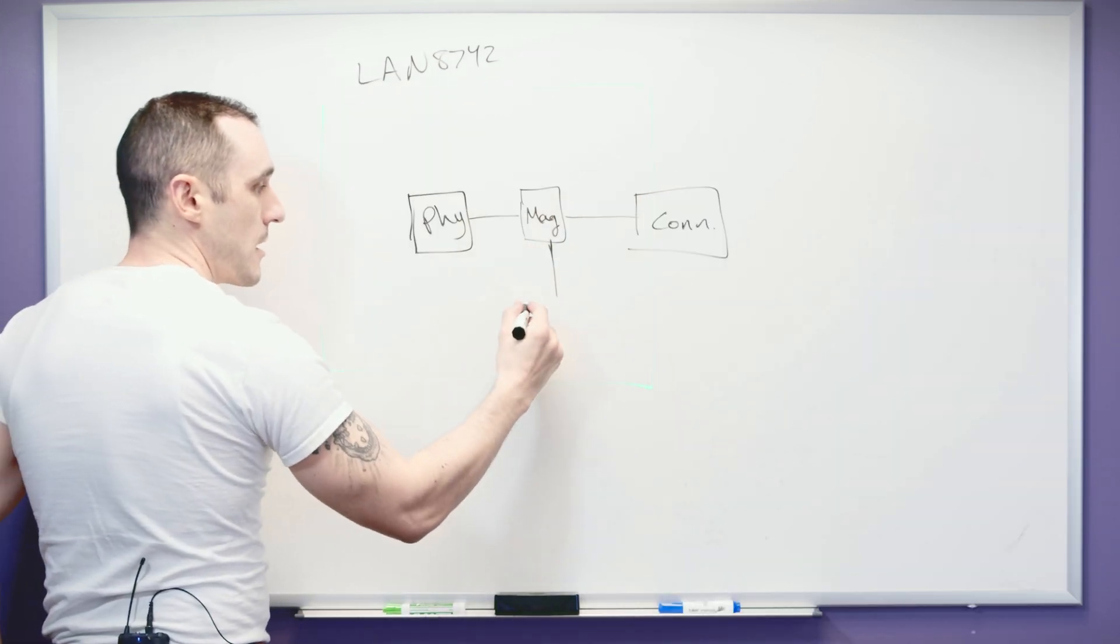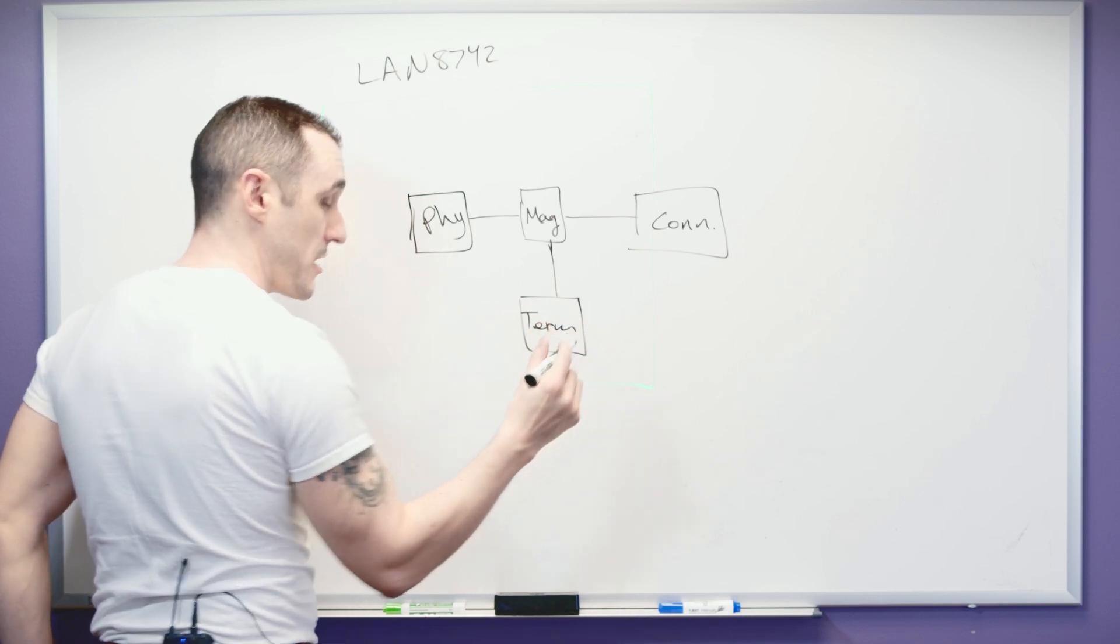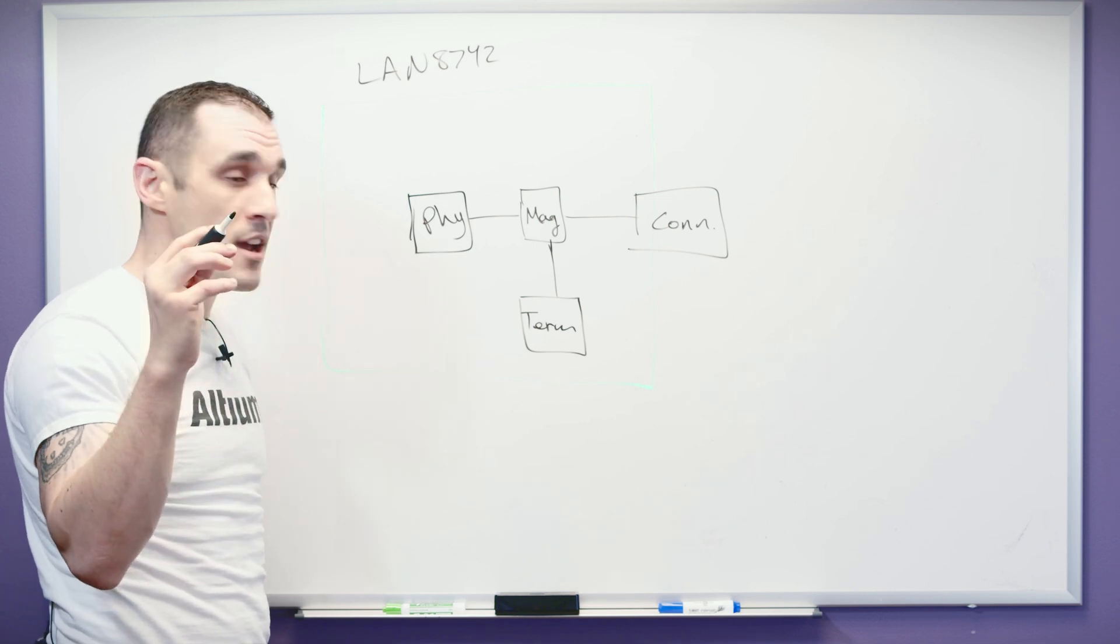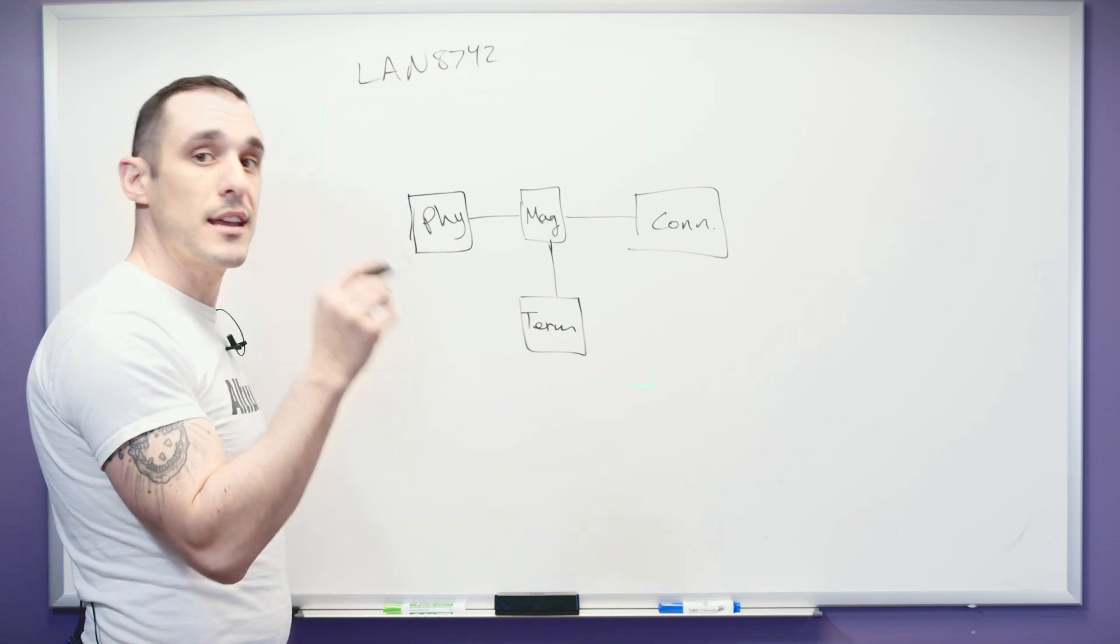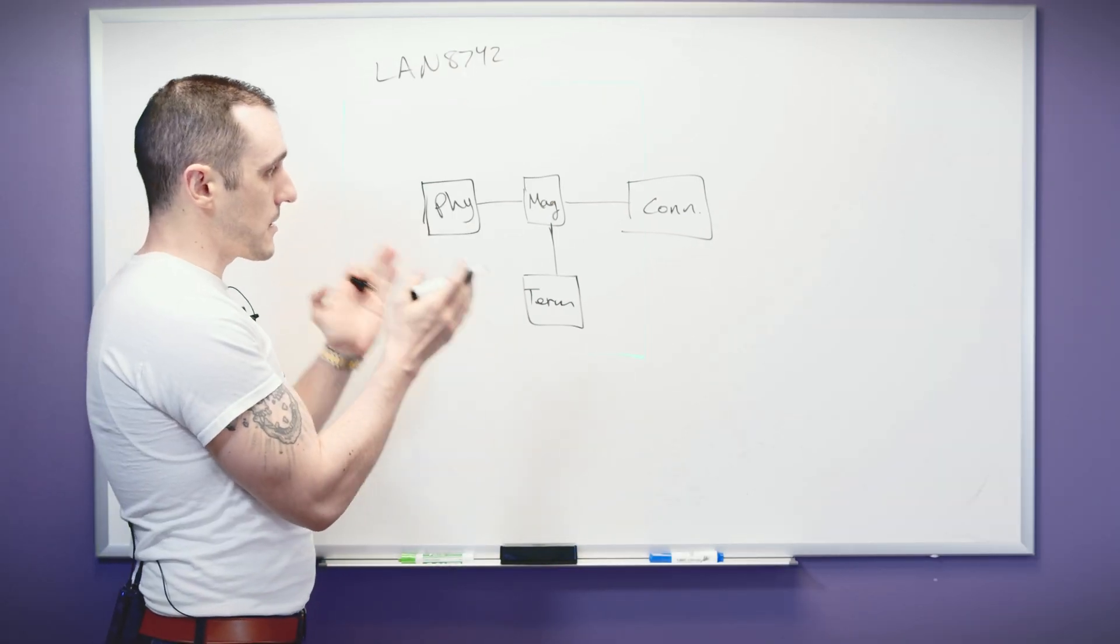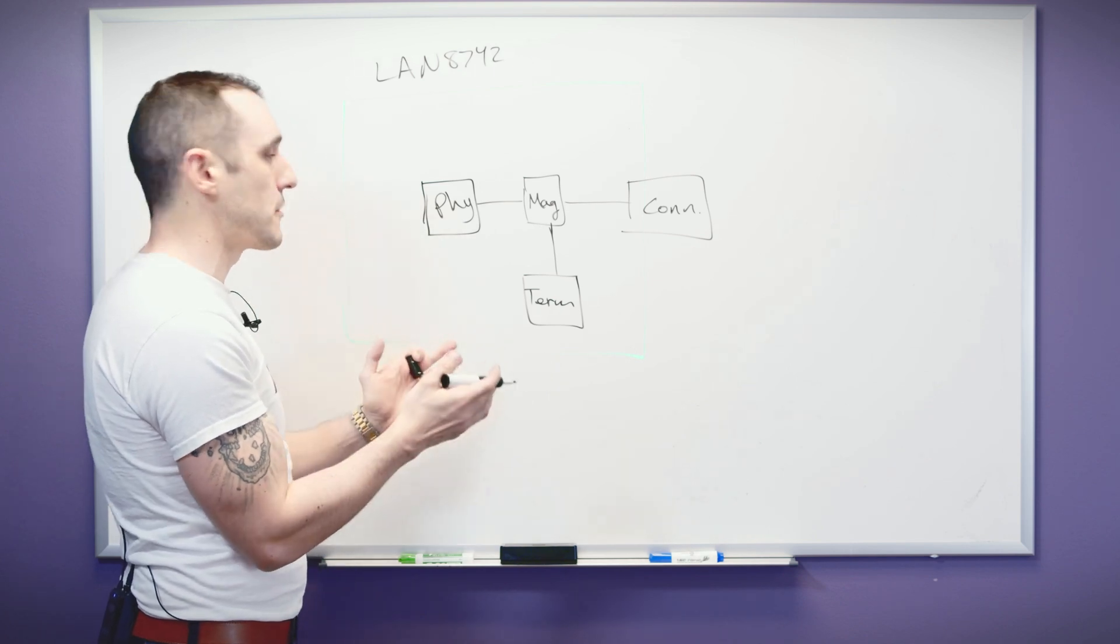Now there's also going to be a termination circuit and this is called a Bob Smith termination circuit. And if you want to read more about Bob Smith termination I'll include a link to a blog in the description. Make sure to go read about that. So this is the basic layout or the basic topology that you'll find in an Ethernet link.